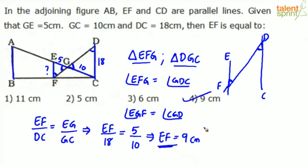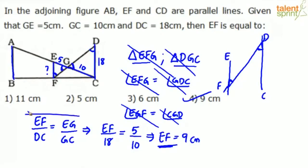When solving yourself, you don't need to write all these steps. Visually, from the figure, you can identify alternate angles and vertically opposite angles directly, recognize the similar triangles, and apply the ratio of corresponding sides to find EF = 9 centimeters. So option 4 is the answer.